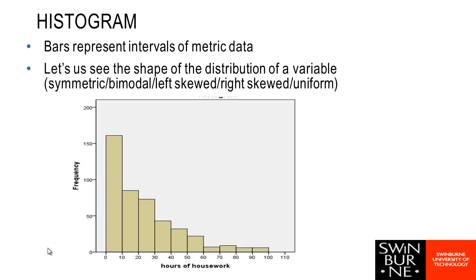I've got a list there: symmetric, bimodal, left skew, right skew, uniform. This one that we're looking at here we would describe as right skew. We can see that most of the data here is fairly low and then we've got a tail that goes off to the right. There's a small handful of people with these very, very high values, but most of the values are much lower. So this is an example of some right skewed data.